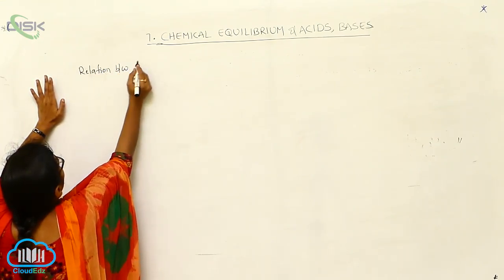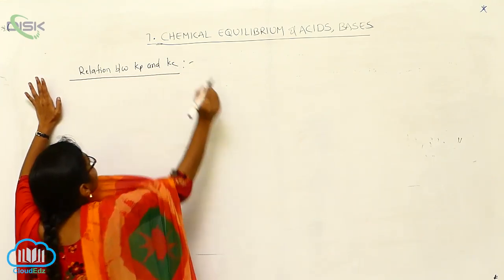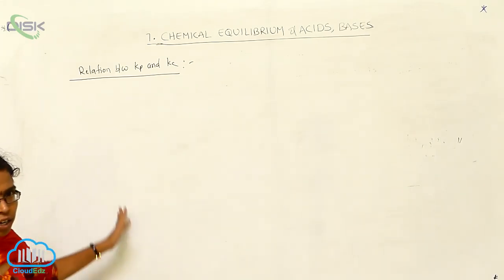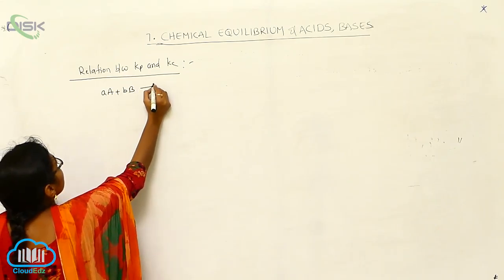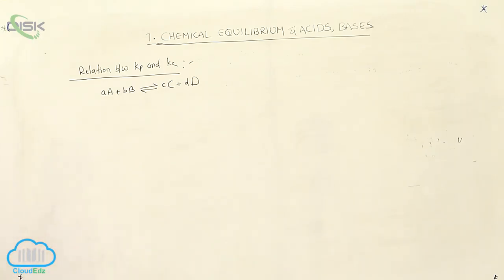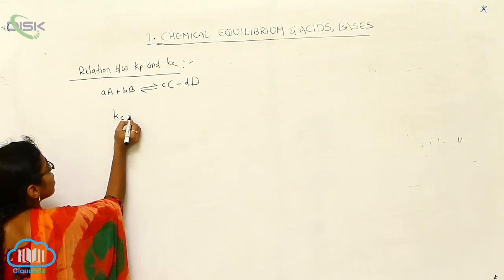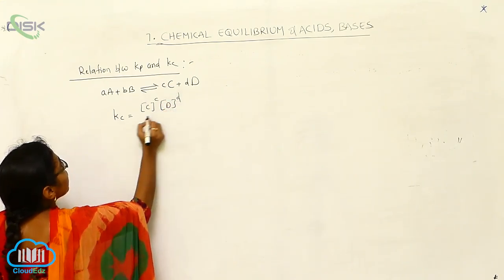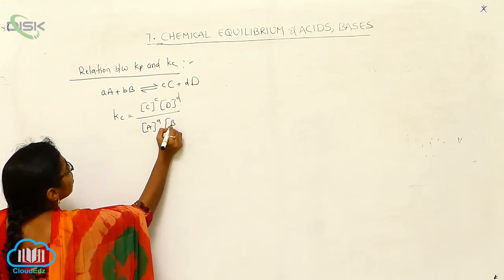Relation between Kp and Kc. For this, I take the general example: small a, capital A, small b, capital B, equilibrium, small c, capital C, small d, capital D. This is a general chemical equilibrium reaction. For this one, first you can write what is Kc: Kc = [C]^c × [D]^d divided by [A]^a × [B]^b. This is equation 1.